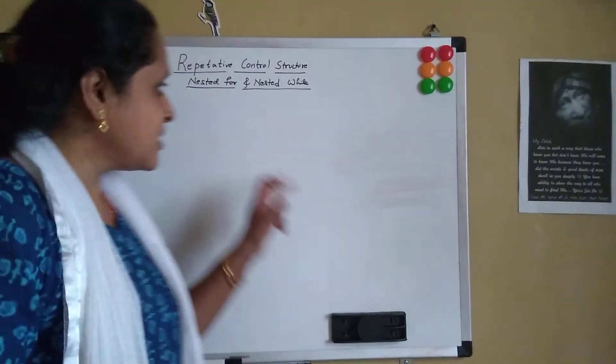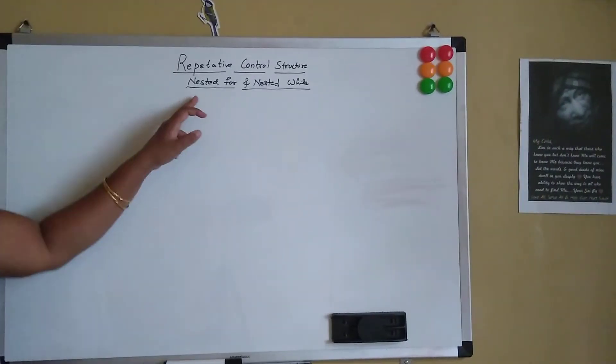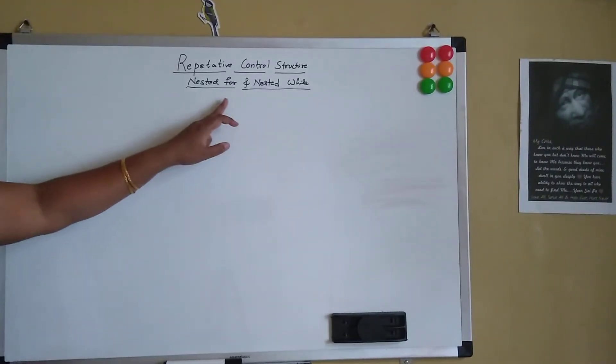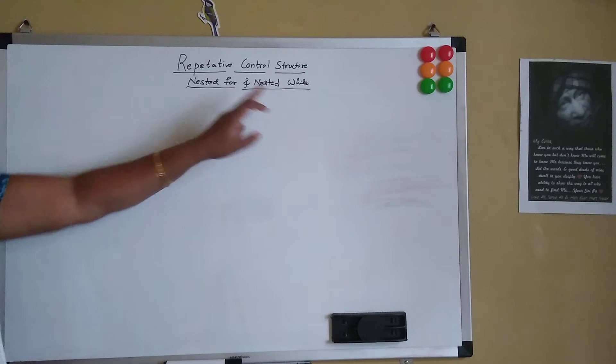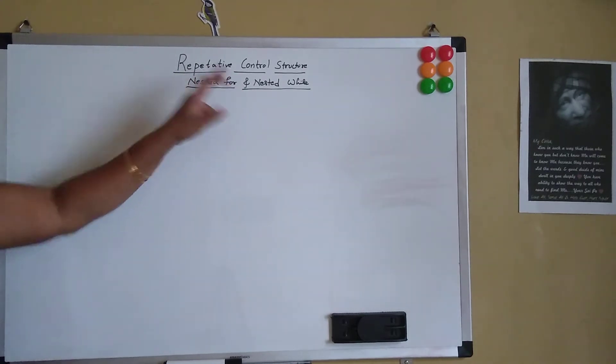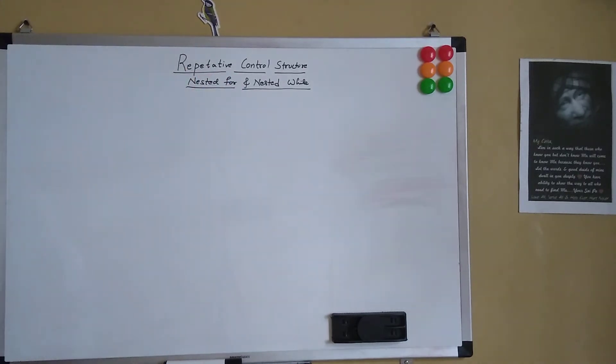Hello friends, welcome back to the Python programming session. In the earlier session, we looked into the for loop and the while loop in repetitive control structure. And in today's session, let's look into the nested for and nested while loops in the repetitive control structure.